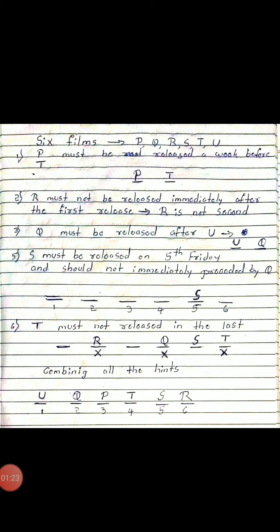Hint 1: P must be released a week before T, so P comes one week before T in the order. Hint 2: R must not be released immediately after the first release, so R is not in the 2nd week. Hint 3: Q must be released after U — the order is U then Q in consecutive weeks. Hint 4: S must be released on the 5th Friday and should not be immediately preceded by Q.